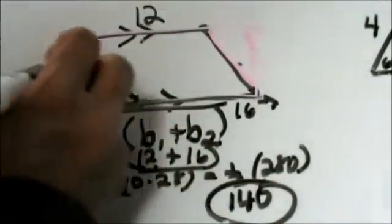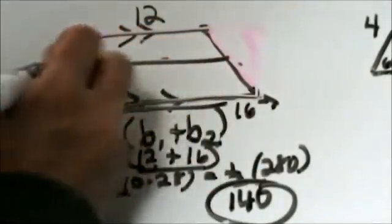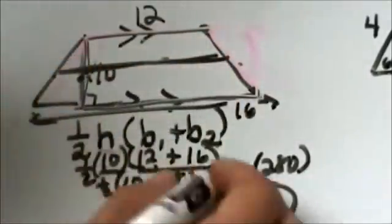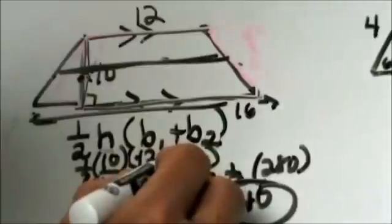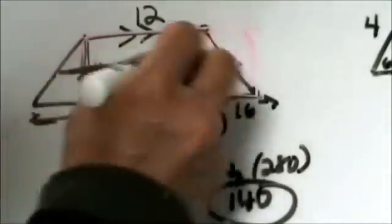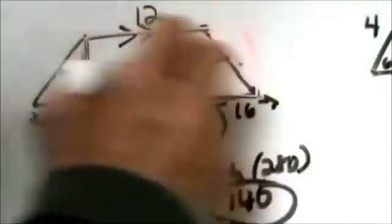Now notice this distance from here to here, that mid segment is actually 14. So if you wanted to average 12 and 16 together you would get a mid segment of 14 and almost treat it like a rectangle.